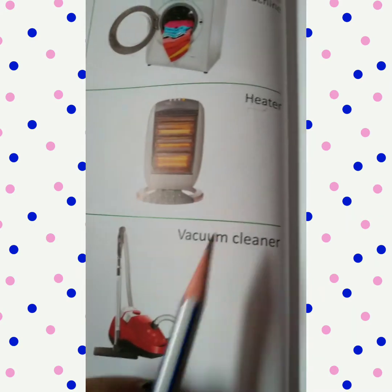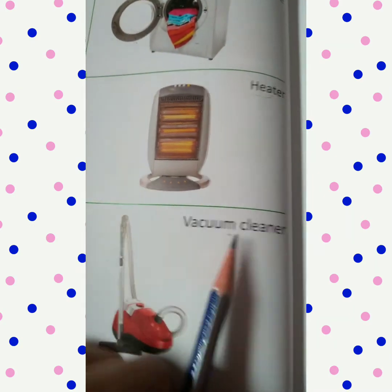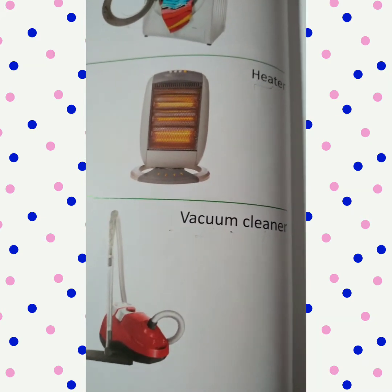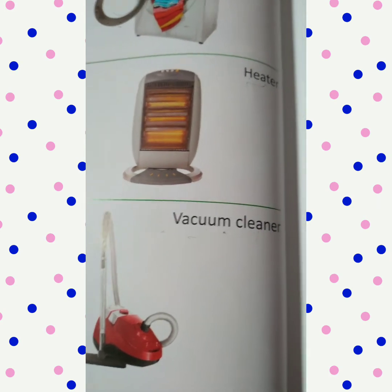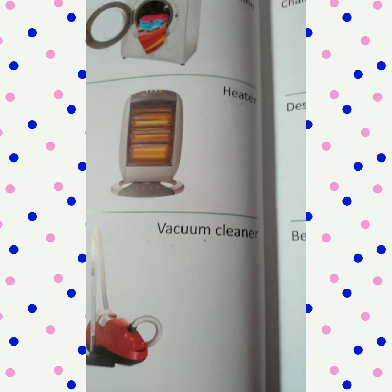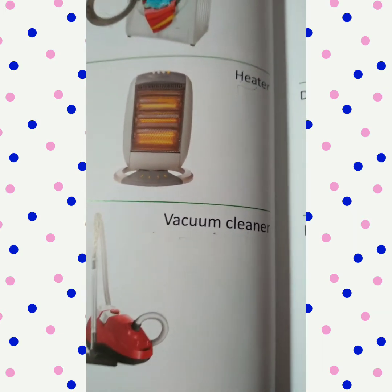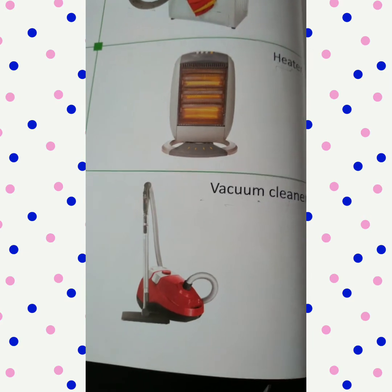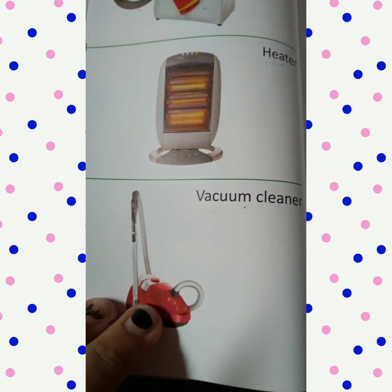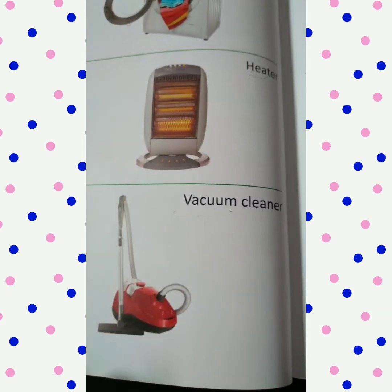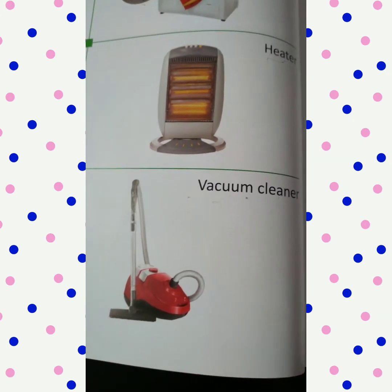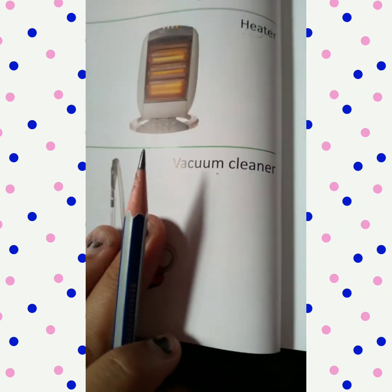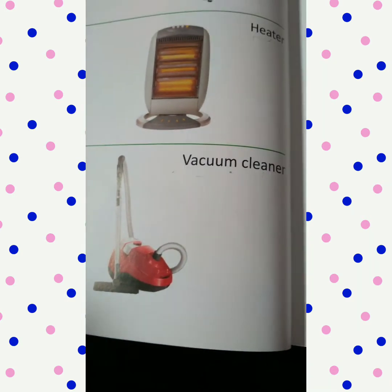Now, vacuum cleaner: V-A-C-U-U-M C-L-E-A-N-E-R. We do dusting at our homes with dusting cloths, sometimes with a brush. But for cleaning things like mattresses, car seats, and carpets, we need a vacuum cleaner. It is a cleaning machine — yeh clean karne ki machine hai. It runs with a battery and cleans things very thoroughly. Mattresses and car seats have many germs, so vacuum cleaner dusting kar deti hai — it cleans everything properly so we can use them again.